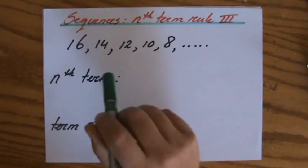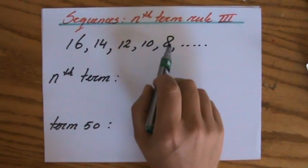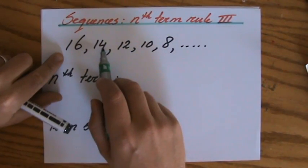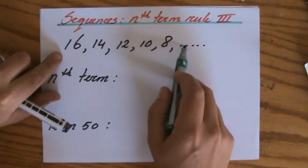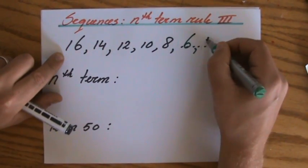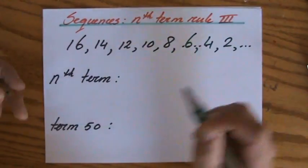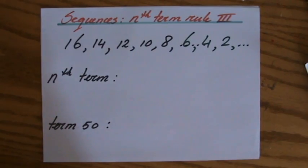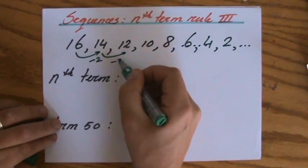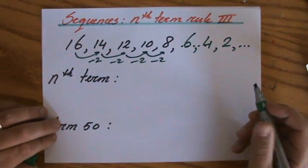Let's have a look — perhaps you can already answer it. We have 5 terms: 16, 14, 12, 10, 8. What is term 6 going to be? It's going to be 6. And the next one is going to be 4. And the next one is going to be 2. Because the term-to-term rule every time is take away 2 — between each term they take away 2.